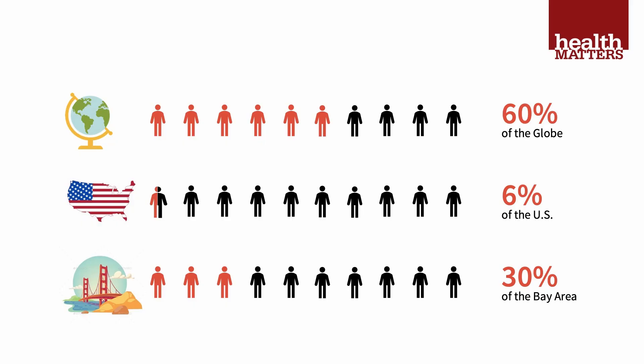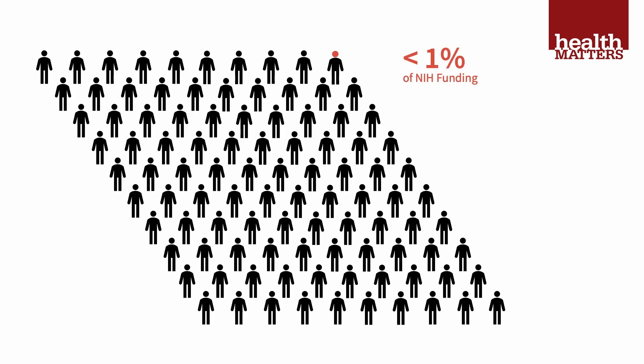Asians make up 60% of the world's population, 6% of the US population, and 30% of the Bay Area population, which is why it's uniquely Stanford's opportunity to study this diverse population and do work that will impact most of the world. Less than 1% of NIH funding goes to Asian American health research, despite Asians making up 60% of the world's population and 30% of the Bay Area population.